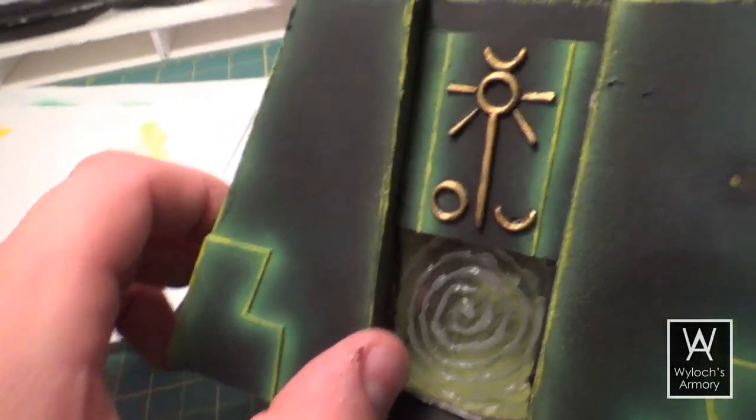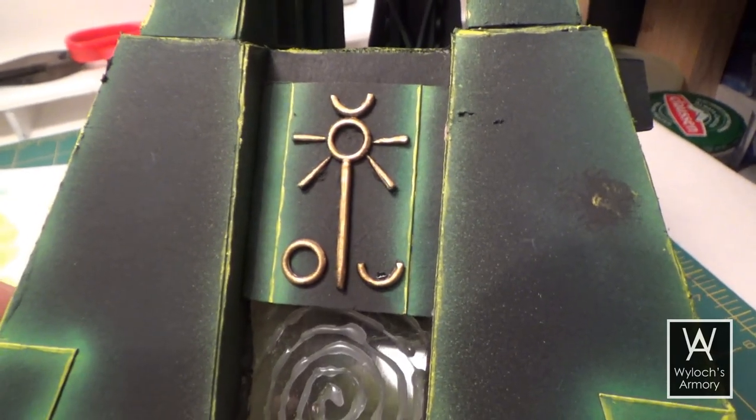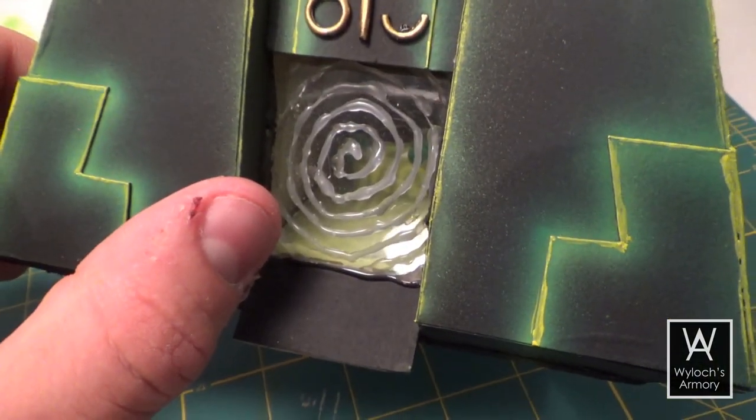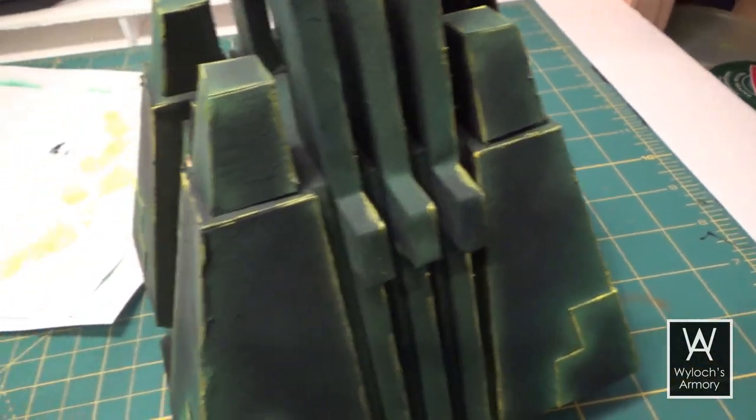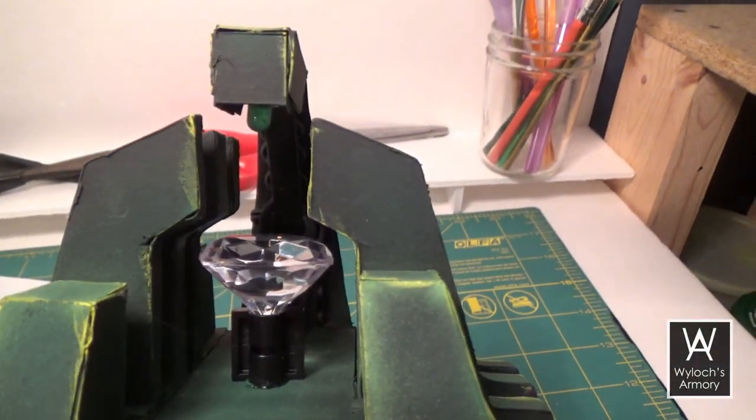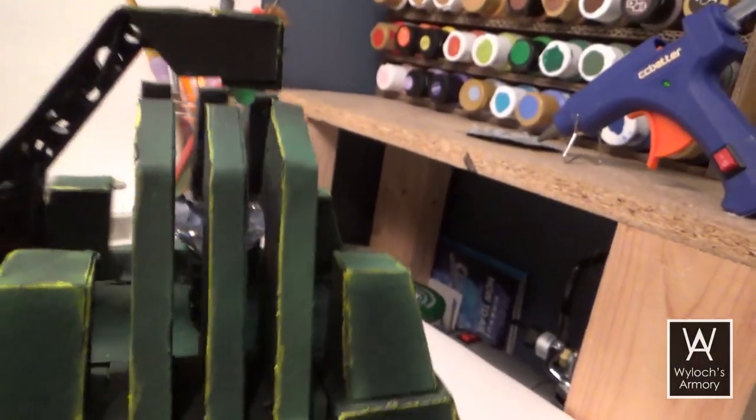Finally I took that fake diamond and hot glued it to some random black Lego piece which I attached to the top.